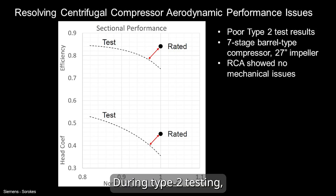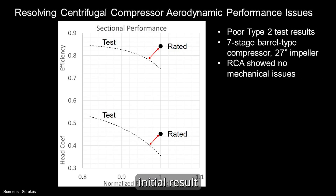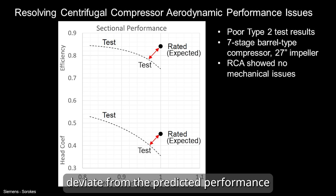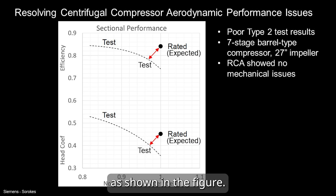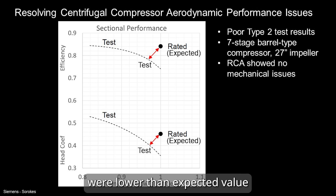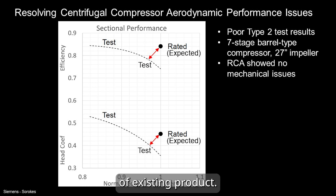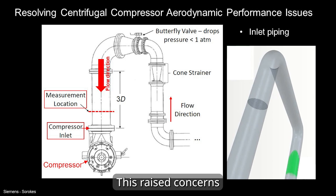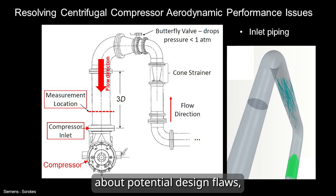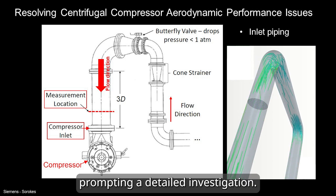During Type II testing, initial results deviated from the predicted performance, as shown in the figure below. The measured values were lower than expected based on the performance of existing products. This raised concerns about potential design flaws, prompting a detailed investigation.